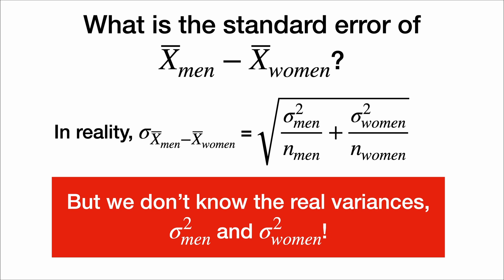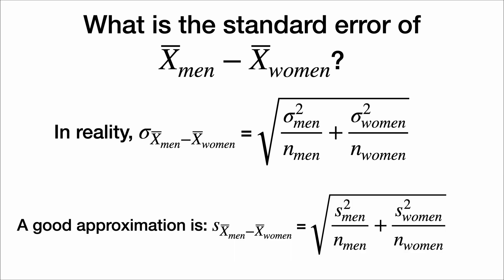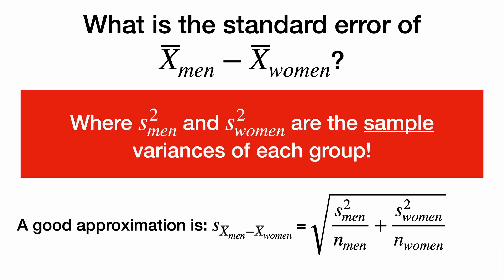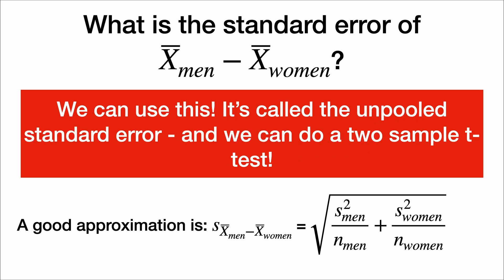And that's why we often do a t-test where we estimate these variances. So we could estimate this quantity by replacing the true variances, sigma, with the sample variances, s. These are the sample variances of each group that are easily computed from the data. And we can do this.